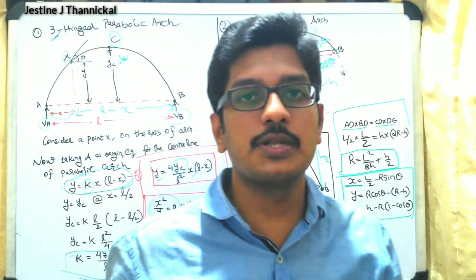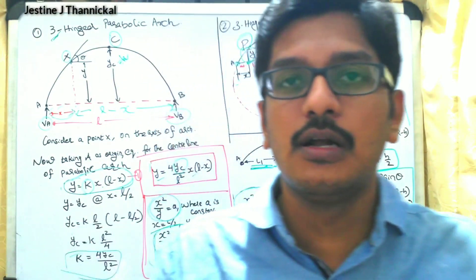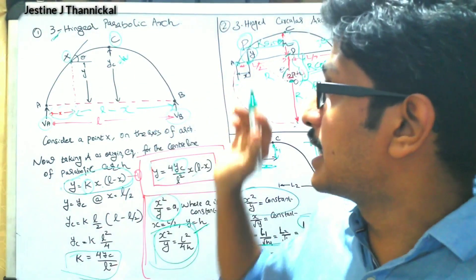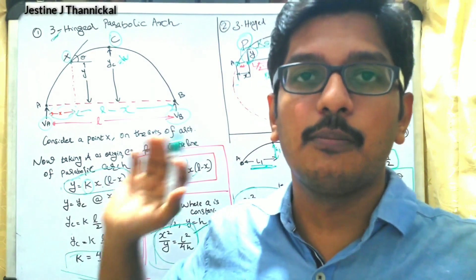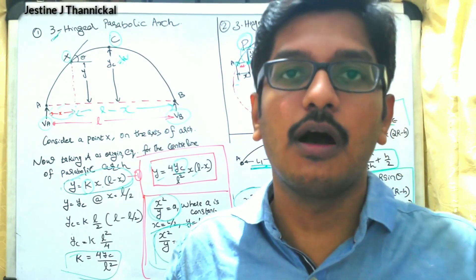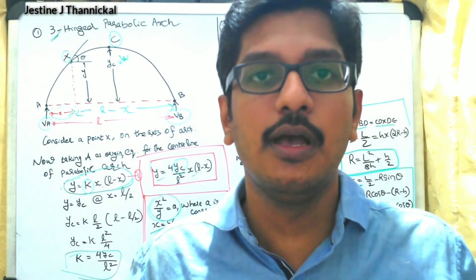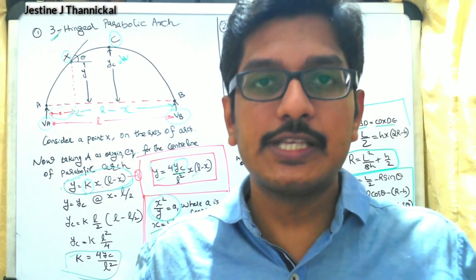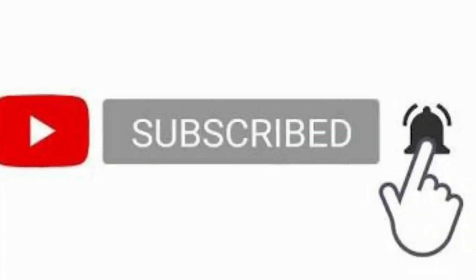These are the terminologies related to the three-hinged arches — both parabolic and circular. I hope this section is very clear for you. With this, we will wind up today's section. Thank you.